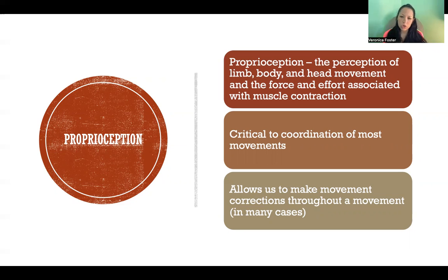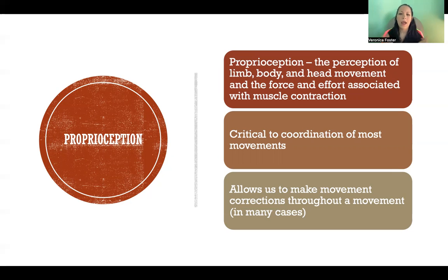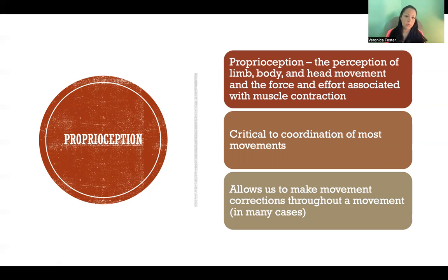Proprioception is critical to the coordination of most movements — movements where there is time for sensory feedback to go from the periphery back to the control center, the central nervous system, and then to send corrections back out again to coordinate that movement. Proprioception is critical feedback we use to correct movement patterns and make corrections as we're engaging in that movement.